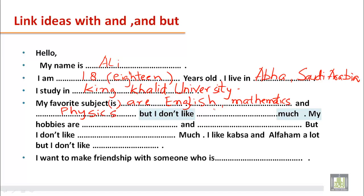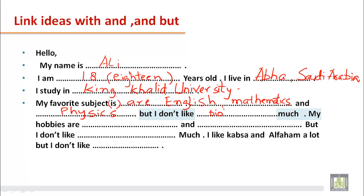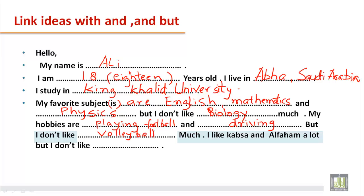'But I don't like Biology much.' For hobbies: 'My hobbies are playing football and driving, but I don't like volleyball much.' For food: 'I like Qabsa and Al Faham a lot, but I don't like spicy food.' Notice we use 'and' to connect things we like and 'but' to introduce dislikes.